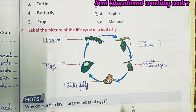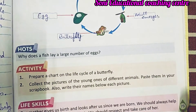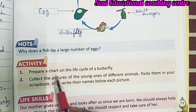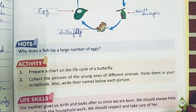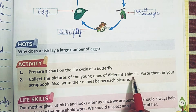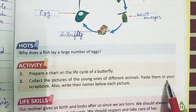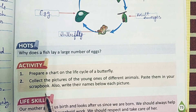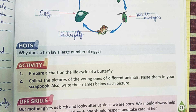यह है आपका butterfly का life cycle। Activity for you: prepare a chart on the life cycle of a butterfly — यहाँ पे जैसा circle दिया गया है, आप ऐसा एक chart पे बनाएंगे और अपनी class में लगाएंगे। अलग-अलग animals के जितने भी babies होते हैं, उनकी pictures collect करके अपनी scrapbook में paste करें और उनके नीचे उनका नाम लिखें। यह था आपका lesson — please video को ज़्यादा से ज़्यादा share करें।